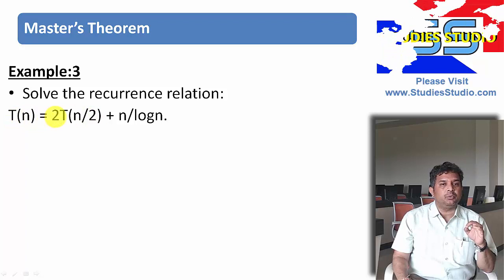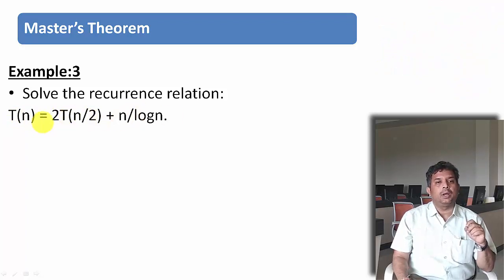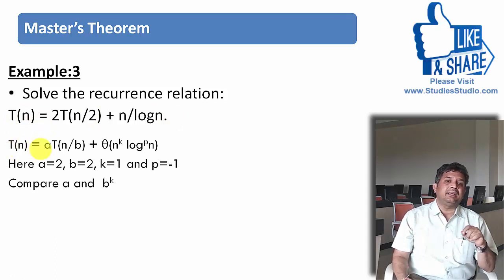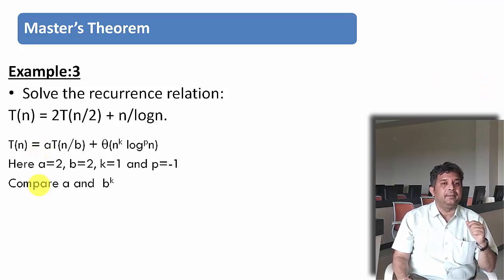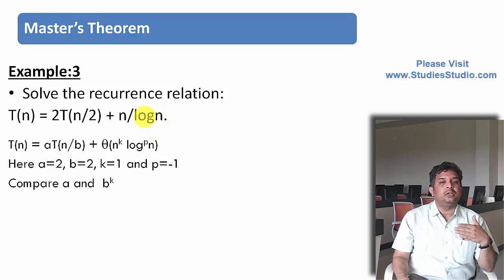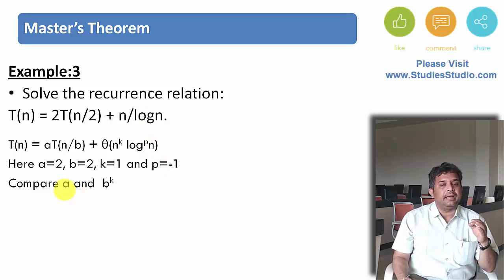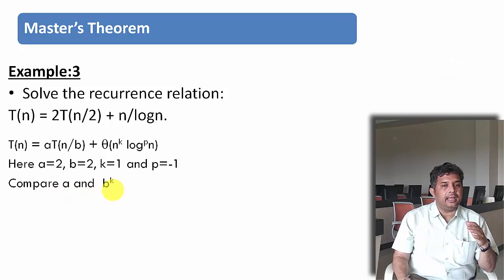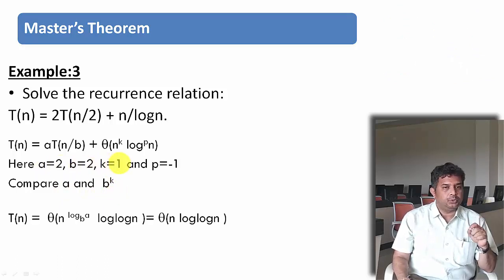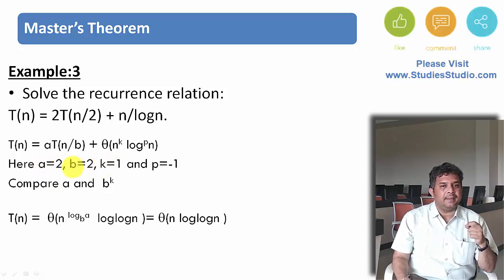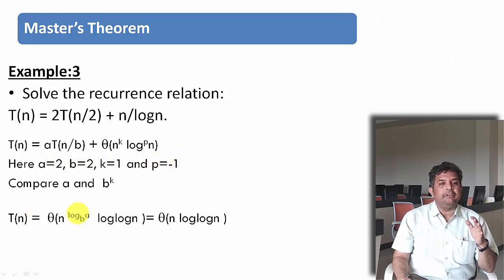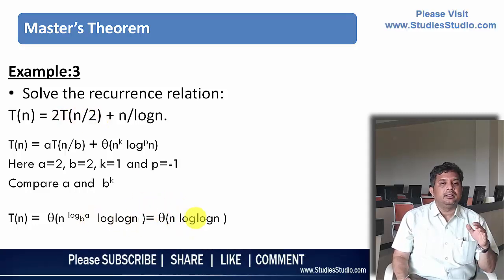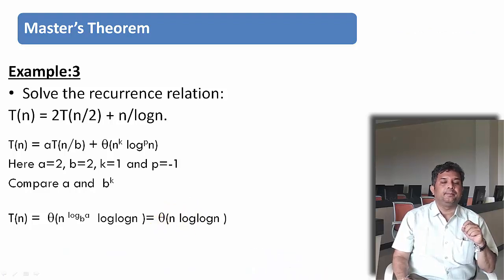The recurrence relation given is T(n) = 2T(n/2) + n/log n. Comparing with the Master's Theorem formula: a = 2, b = 2, k = 1, and p = −1. Why minus 1? Because the log term is in the denominator, so p = −1. Here a = 2 and b^k = 2, so they are equal, and p = −1. Accordingly we apply the rule for p equal to minus 1, and the complexity will be Θ(n log log n).